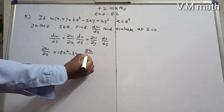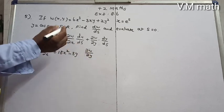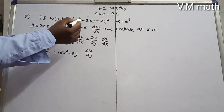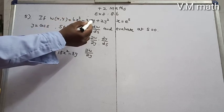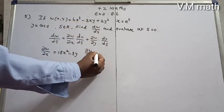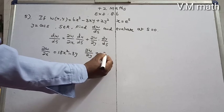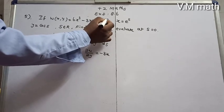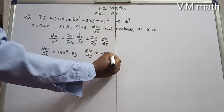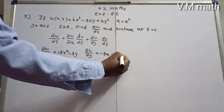Next, ∂w/∂y. Taking the partial derivative with respect to y: the first term becomes zero, the second gives -3x, and the third using the power rule gives +4y.